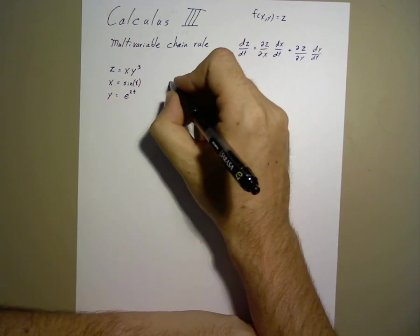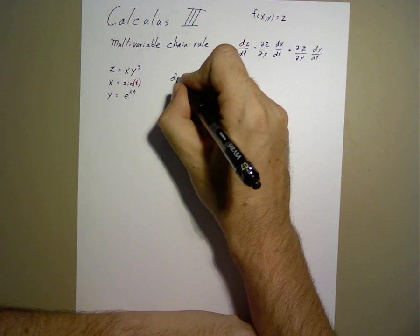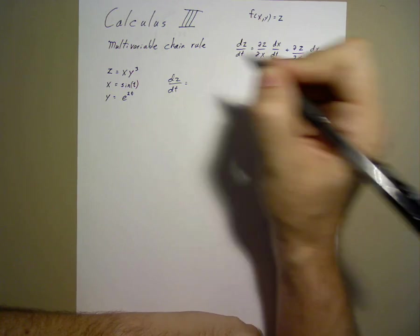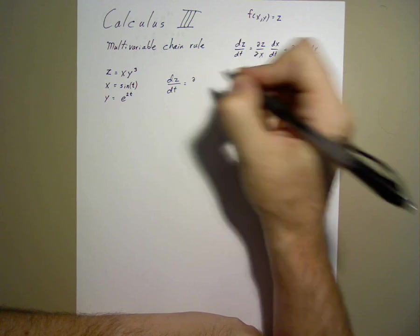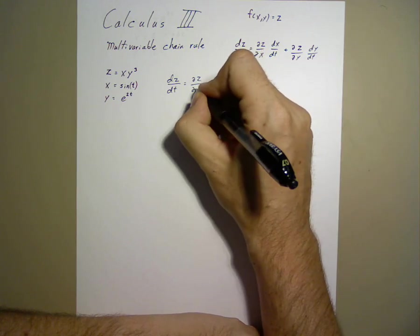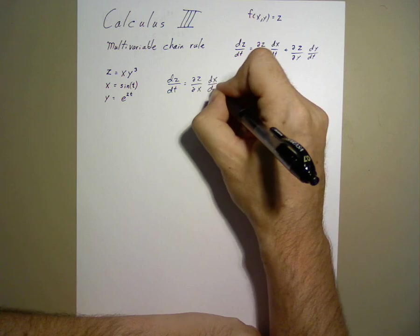To find the time derivative of z, dz/dt, we first deal with x, partial derivative of z with respect to x, dx/dt.